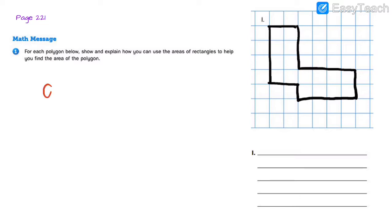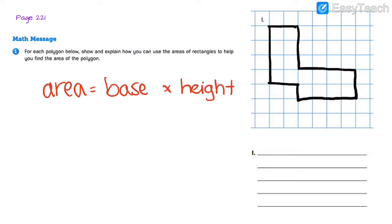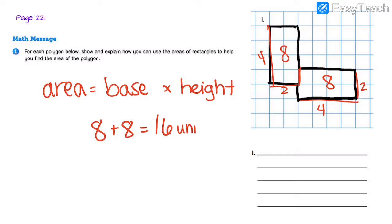We know that to find area, you need to do base times height. Let's figure out a way that we can split up this polygon into two rectangles — or multiple rectangles. The obvious choice is to cut it in half and see that we've got two equal-sized rectangles. Our base for the first rectangle is 2 and our height is 4, and 2 times 4 is 8. For the second one we've got a base of 4 and a height of 2 — 4 times 2 is also 8. To find the combined area, you'd add the two smaller areas together to get 16 units squared.